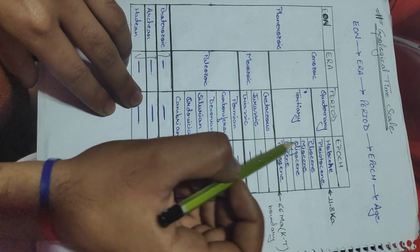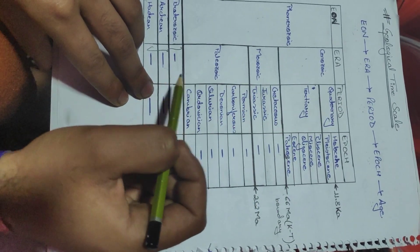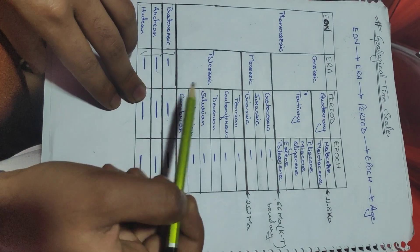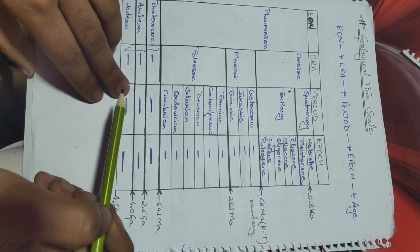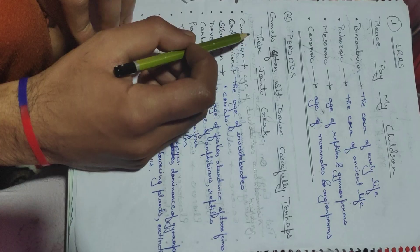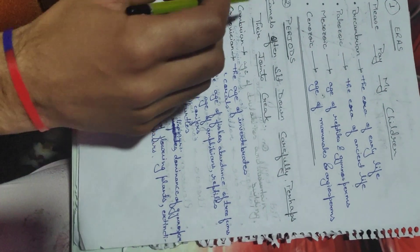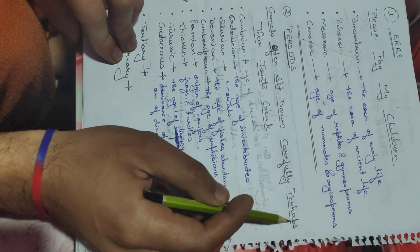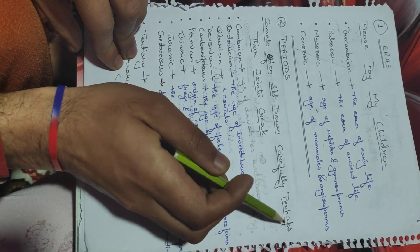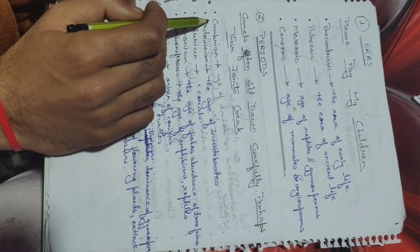Each era of the geological time scale is divided into different periods, and it is very difficult to learn them systematically. A simple sentence to learn the periods of the geological time scale is: 'Camels Often Sit Down Carefully Perhaps Their Joints Creak.'